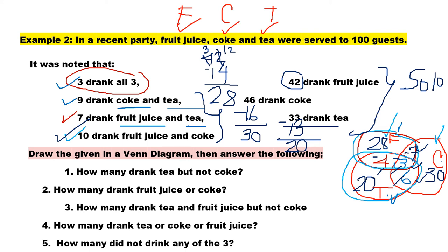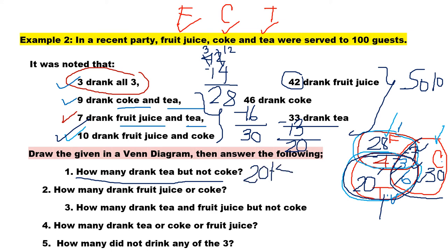There you go. So if the question is: how many drank tea but not Coke? We look at the tea circle but exclude the Coke portion. That leaves us with 20 plus 4, which is equal to 24.